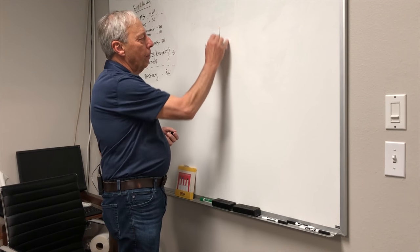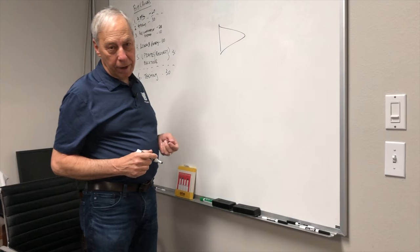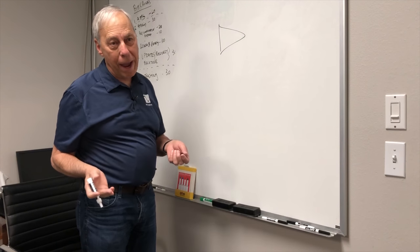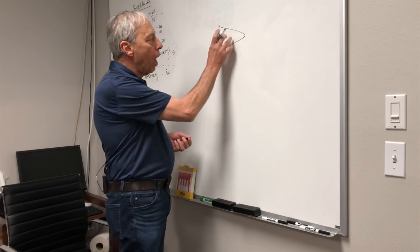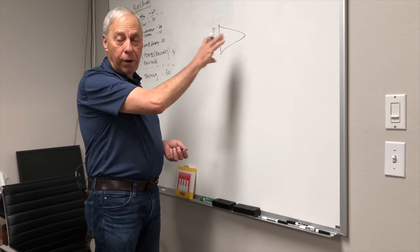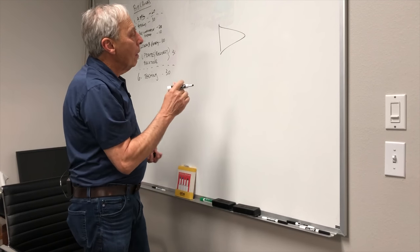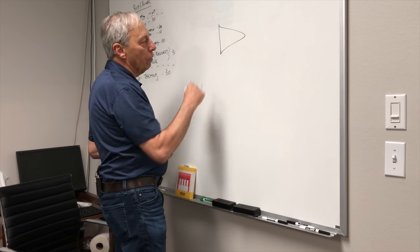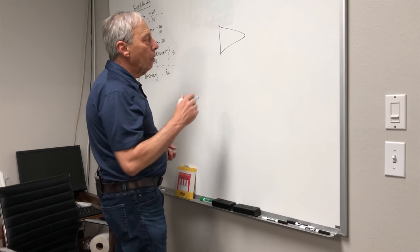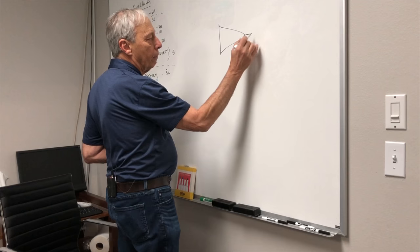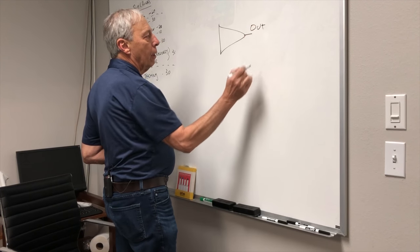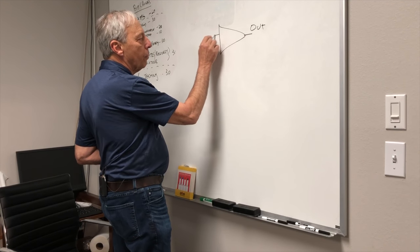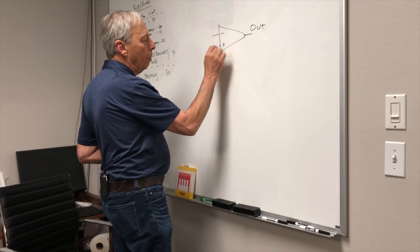First off, let's start with how we draw an amplifier. On a schematic, it's a very simple block that is basically a triangle on its side, right? In this particular amplifier, we'll use an op amp as an example. We'll have output, and then we're going to have two inputs - a minus input and a plus input.